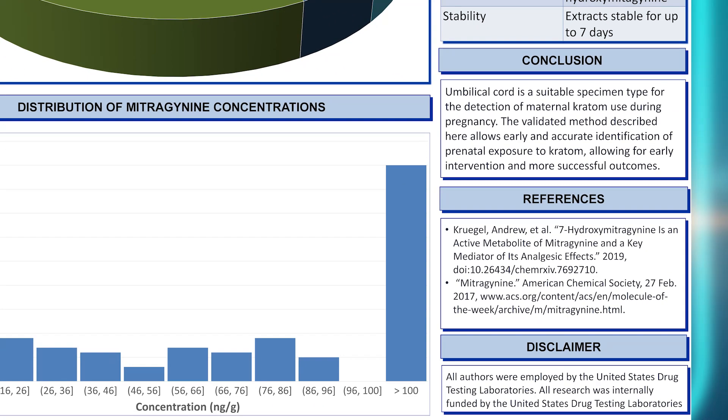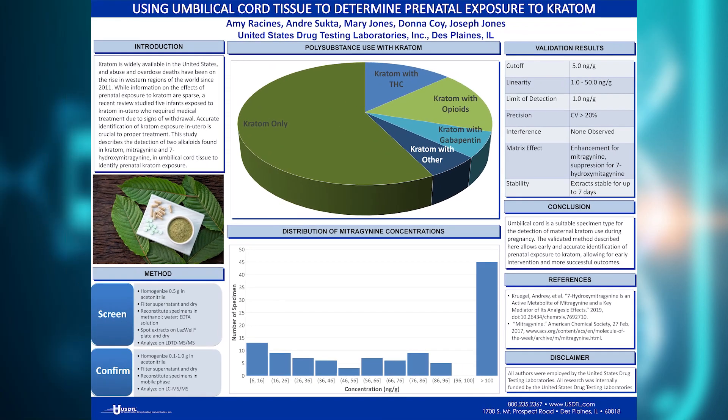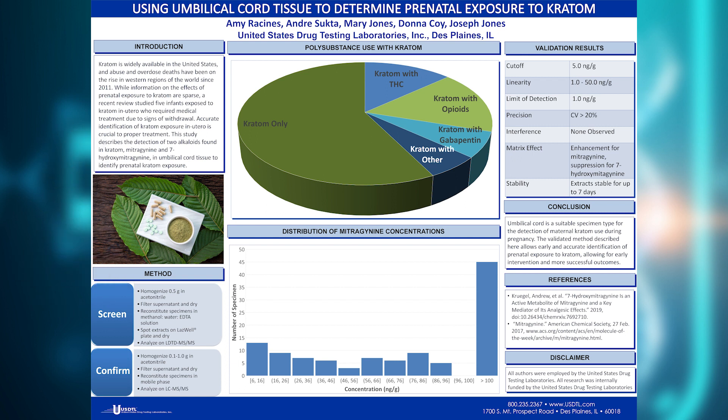In conclusion, this poster describes our fully validated methods for the detection of mitragynine and 7-hydroxymitragynine in umbilical cord. Due to the results of our polysubstance use data, which indicates that over half of all newborns exposed to kratom are not exposed to any other drugs, we believe this assay aligns with our vision of protecting and enriching lives. We hope our clients find this assay useful. Thank you so much for listening, and at this time I'd be happy to take any questions that you may have.